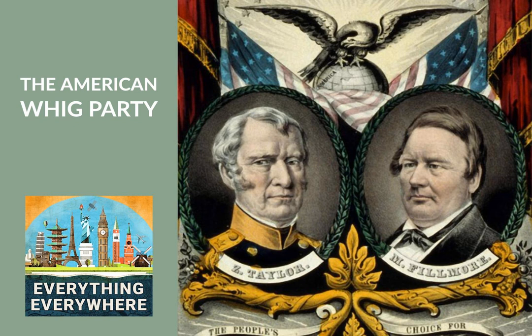But Taylor too died in office two years into his term, and he was replaced by his running mate, Millard Fillmore. By the time the 1850s rolled around, the Whig issues of a national bank, infrastructure improvements, and opposition to tariffs took a back seat to the issue which completely dominated American life: slavery. The Whig Party had members in both the North and the South, with two of their four presidents coming from each. However, the North-South divide in the party couldn't withstand the growing debate about slavery.